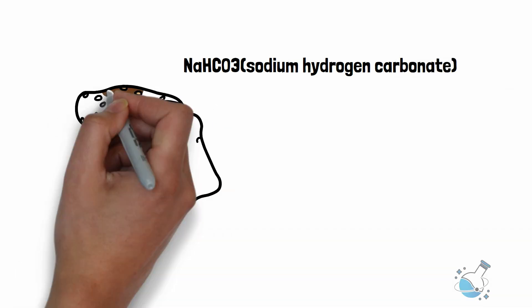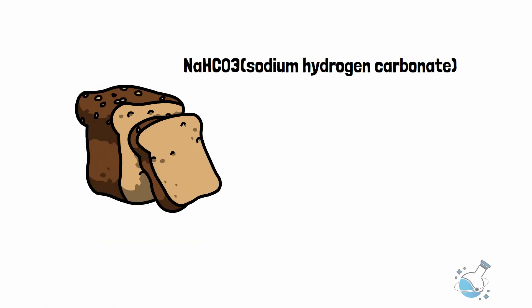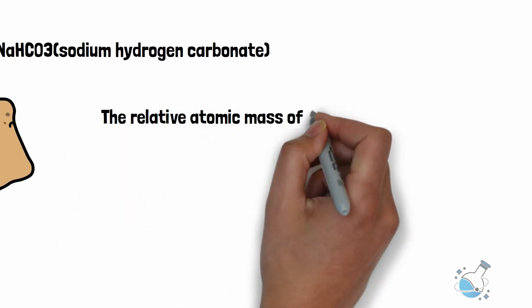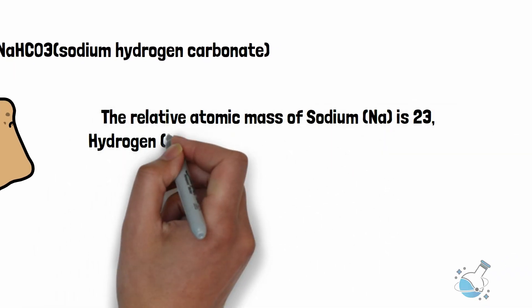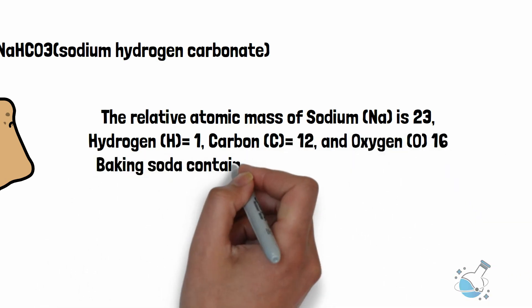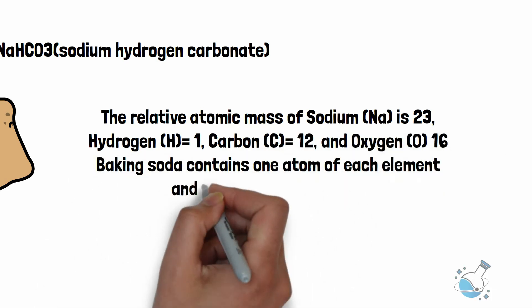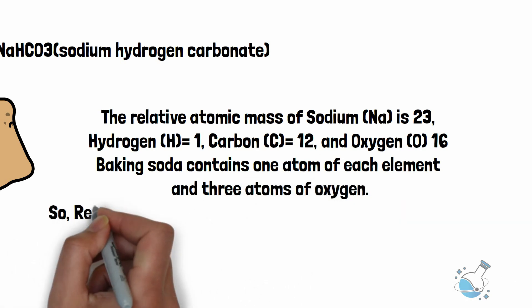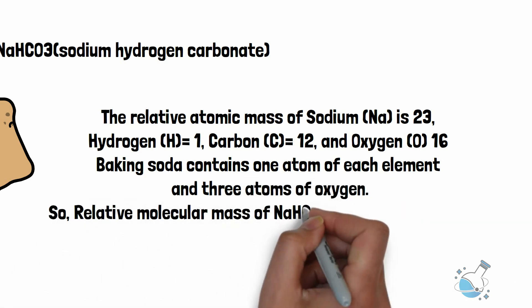Let's look at an example. Take sodium hydrogen carbonate, the must-use ingredient for baking cakes and cookies, the baking soda. The relative atomic mass of sodium is 23, hydrogen 1, carbon 12, and oxygen 16. Baking soda contains one atom of each element and three atoms of oxygen.